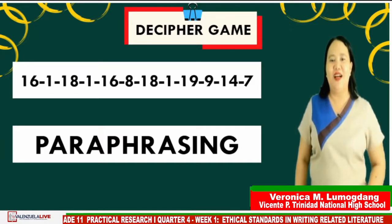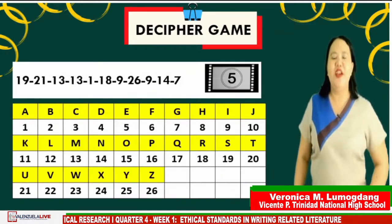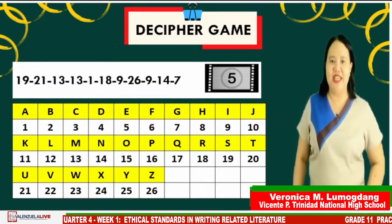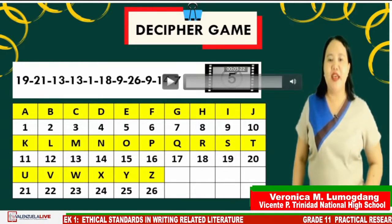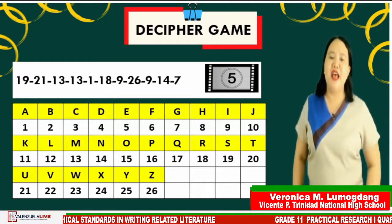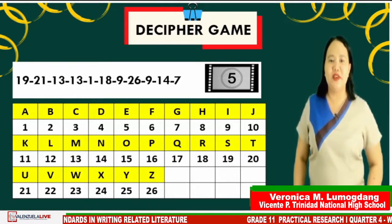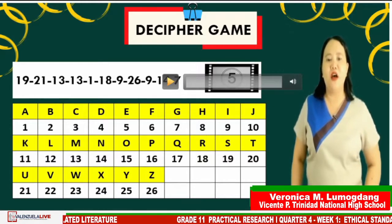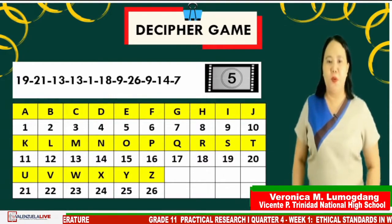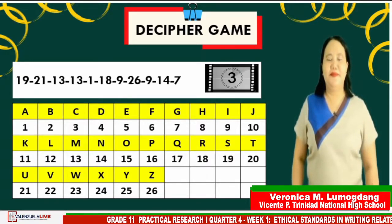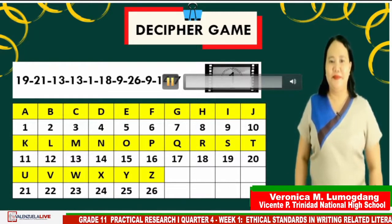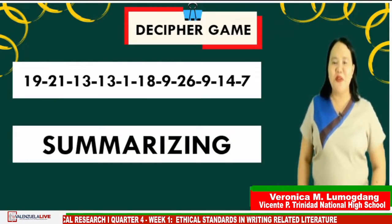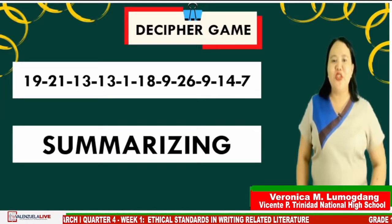Another set of numbers are 19, 21, 13, 13, 1, 18, 9, 26, 9, 14, 7. Clue: this is putting together the main idea of the author's writing. Go! If your answer is 'summarizing,' grade 11, you're superb! Congratulations to active students who joined the decipher game!